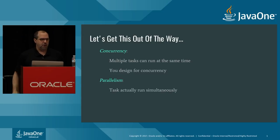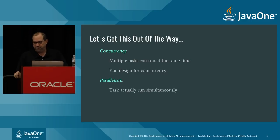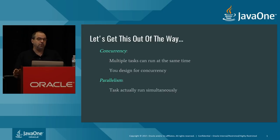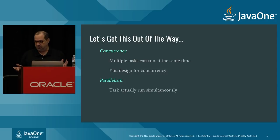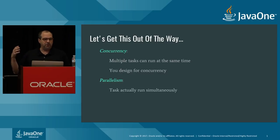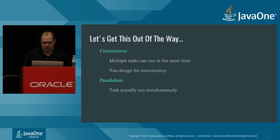Anytime you talk about concurrency and parallelism, somebody gets very precise about it. I'm defining it this way: concurrency is something you design for — having multiple things that can run at the same time, but that doesn't mean they are running concurrently. Parallelism is when we actually are running two things at the same time. In principle, you need multiple cores for parallelism, although multiple threads is effectively parallel too.